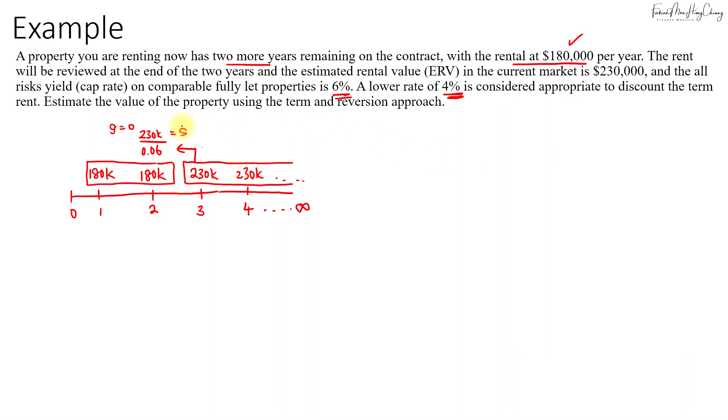That is the PV, the terminal value of the reversion amount. So you will need to discount this amount from year 2 back to year 0. That will also be discounted using 6%.